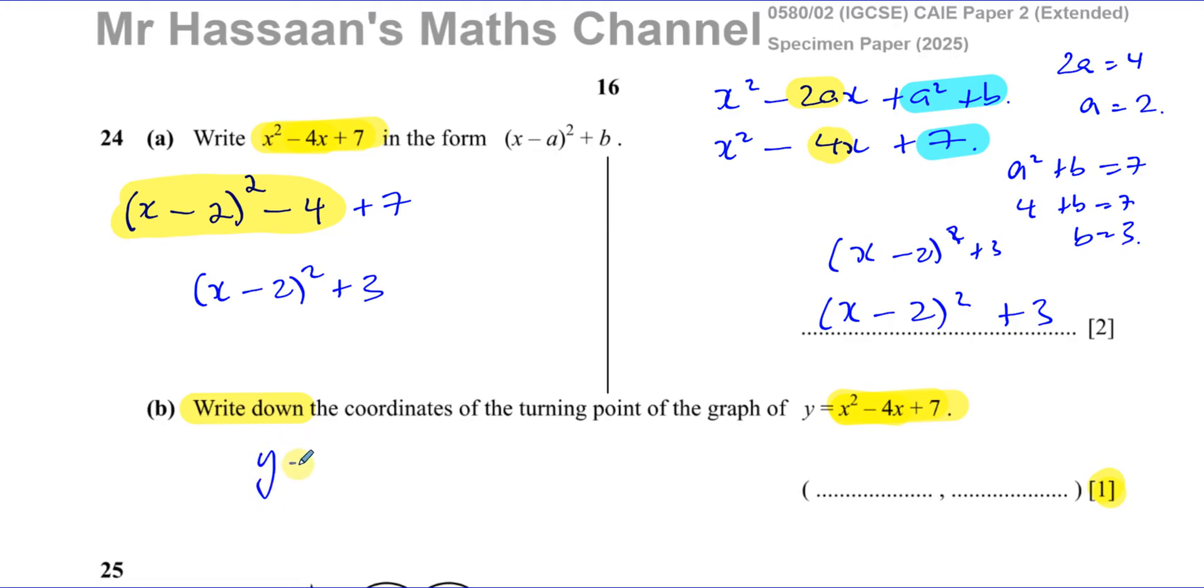We rewrote the equation as y equals x minus 2 squared plus 3. Now many of you will have memorized that the turning point of this graph, this is a quadratic, the turning point is going to be like where the vertex is, that's where it turns, is given by whatever you see inside this bracket with the opposite sign, so it's going to be 2, and whatever's outside the bracket with the same sign for the y coordinate. Now I want you to understand why.